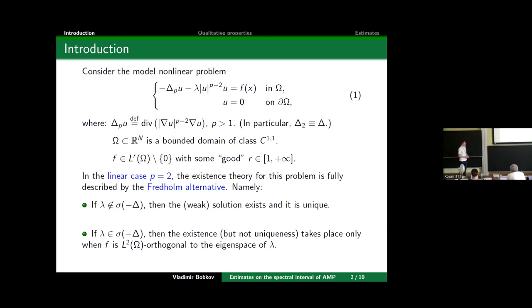In the linear case we have just the Laplacian, and the existence theory for that problem is completely described by the classical Fredholm alternative, which basically says that if λ is not an eigenvalue, then the problem admits a solution and the solution is unique. While if λ is an eigenvalue, then existence can be guaranteed only if f is orthogonal to the eigenspace of the eigenvalue λ, and of course in that case there is no uniqueness.